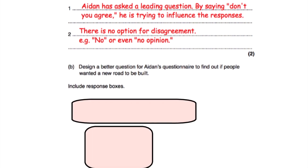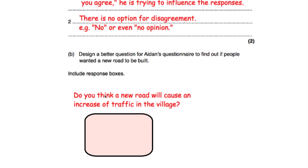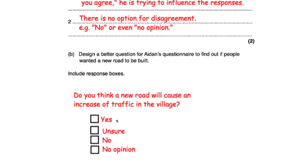Part B asks us to design a better question. I've written: 'Do you think a new road will cause an increase of traffic in the village?' with response boxes: yes, unsure, no, no opinion. This means people can agree, disagree, say they're unsure, or say they have no opinion — perhaps they're not from that village or don't know the area. That's the better question.